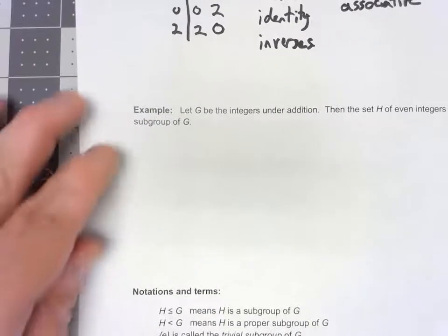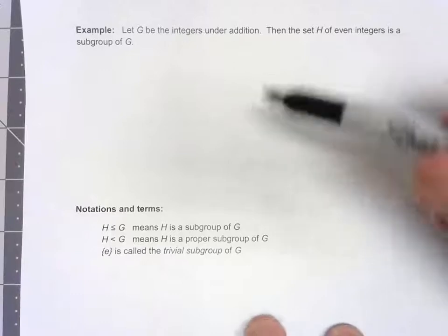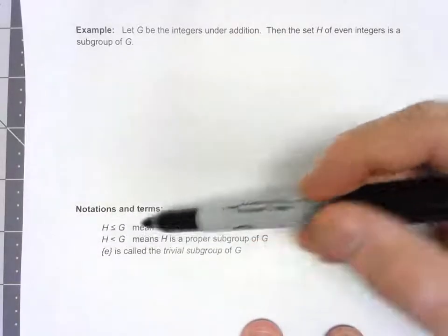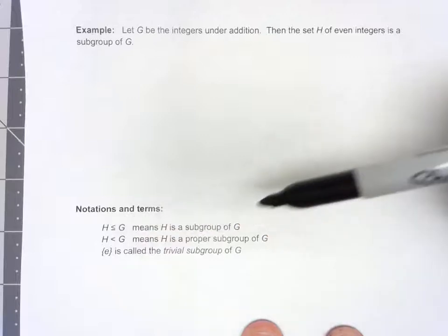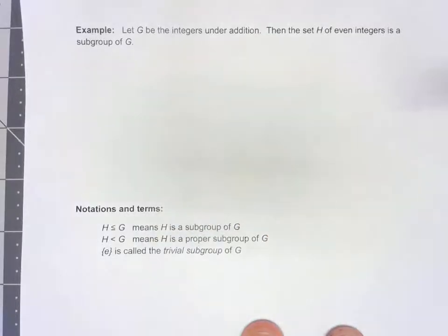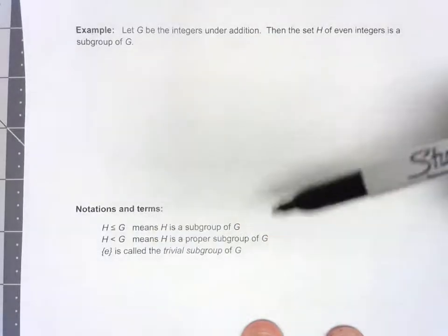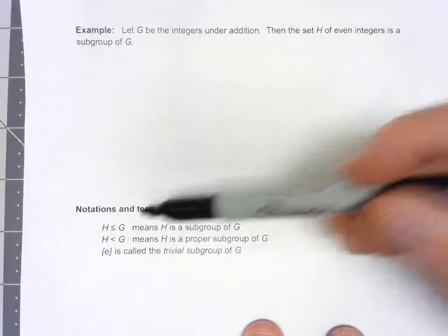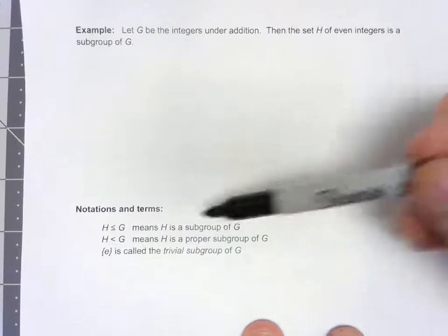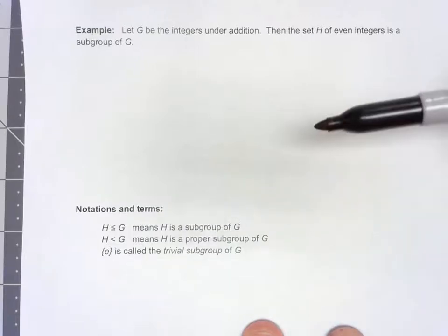I'm going to wrap up this video with a few little notations and things. When we're talking about sets and groups, less than or equal to doesn't refer to our standard numerical comparison. Less than or equal to is going to mean a subgroup. So H less than or equal to G, we're really going to read it as H is a subgroup of G.